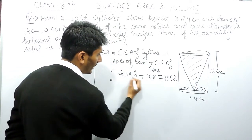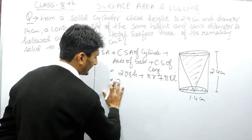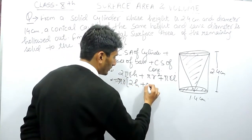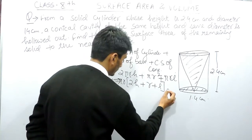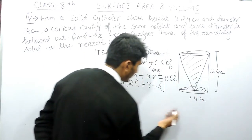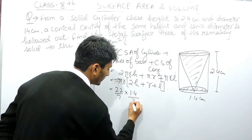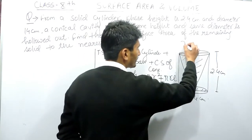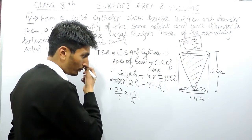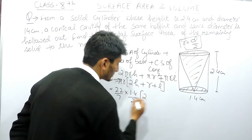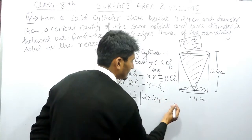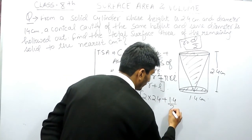Taking πr common, the expression becomes πr(2h + r + l). The value of π is 22/7. The diameter is 1.4 cm, so the radius r = 1.4/2 = 0.7 cm. The height h = 2.4 cm. Substituting: we get (22/7) × 0.7 × (2 × 2.4 + 0.7 + l). Now we need to find the slant height l.